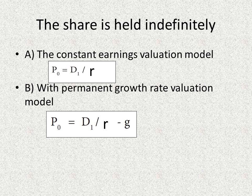We have two measures to calculate the present value of future inflows, and we also need to consider two conditions. The first condition is that you can earn a constant profit in the future. In this case, the price is equal to the net dividend divided by the required return rate. The second condition is when you can get a permanent growth rate in your earnings. In this case, the price is equal to the net dividend divided by the difference between the required return rate and the growth rate.